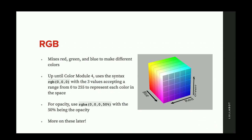Next is the RGB function — not to be confused with the RGB color space. This mixes red, green, and blue to make different colors. Up until Color Module 4, you defined this with three values ranging from 0 to 255, representing red, green, and blue respectively. If you needed to add opacity, you'd use RGBA instead and pass the opacity last. This has changed slightly in CSS Color Module 4, which I'll go over shortly.